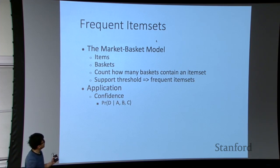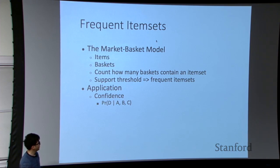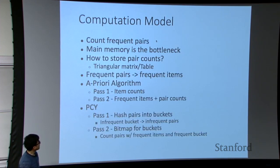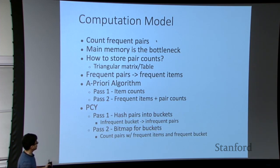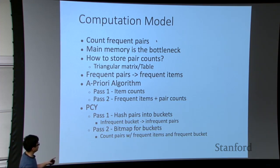Now we'll talk about frequent item sets. This is useful for the market basket model. The main application is: after computing all the frequent item sets, we can use them to compute the confidence, the interest, and to get the association rules. There are two algorithms to compute frequent items in memory. We'll talk about how to deal with large datasets that cannot fit into memory. The two in-memory algorithms are A-Priori and PCY.